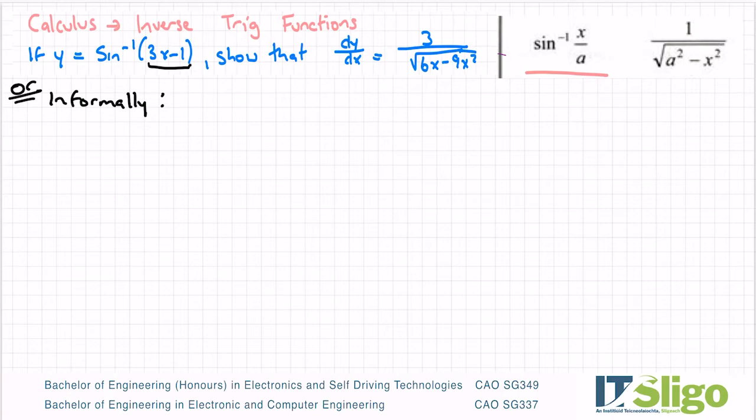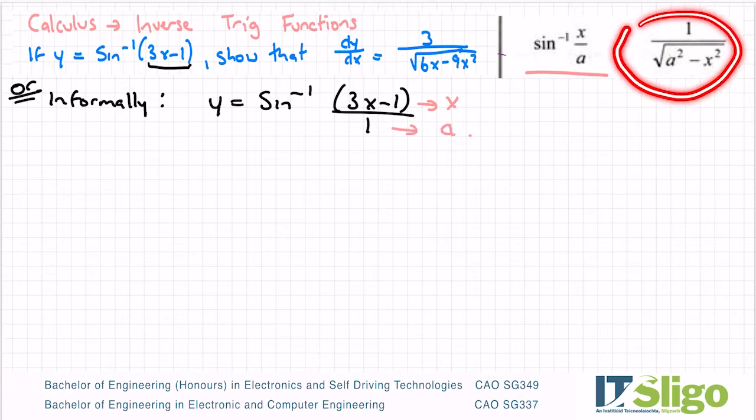Well, I would say y is equal to the sine inverse of 3x minus 1 over 1. Whenever I don't have an a on the bottom, I put in over 1. So there is my x and there is my a. And I'm going to sub directly into this now.